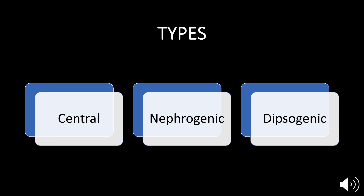In the nephrogenic form, the hypothalamus is working perfectly fine and the posterior pituitary is releasing enough ADH, but the kidneys are not responsive to it — they don't respond to the hormone and cannot retain the water. In the dipsogenic form, this is not related to ADH but to the thirst mechanism in the hypothalamus. When that is damaged, you don't know when you're thirsty and you intake excessive water.